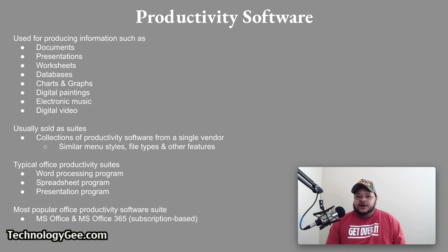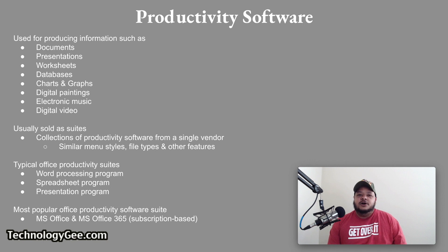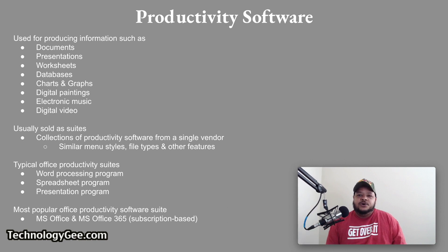Productivity software is application software used for producing information such as documents, presentations, worksheets, databases, charts, graphs, digital paintings, electronic music, and digital video. Many of these apps are sold as suites, which are collections of productivity software from a single vendor that usually share similar menu systems, file types, and other features. A typical office productivity suite includes a word processing program, a spreadsheet program, a presentation program, and might also include other apps. The most popular office productivity software suite is Microsoft Office, also available in subscription form known as Microsoft Office 365.